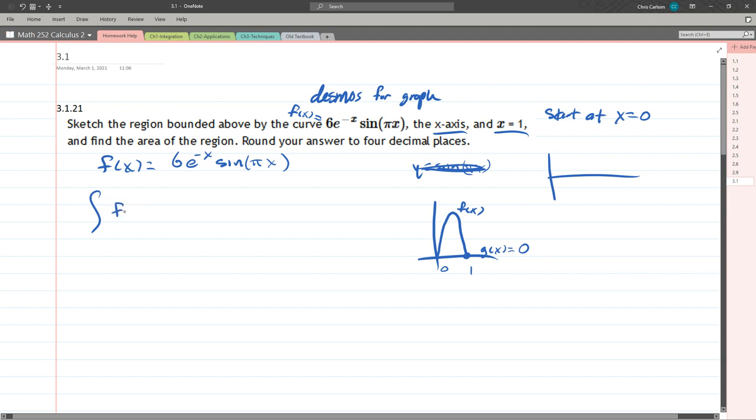We're just going to integrate the big function minus the small function dx from a to b. Now we're going 0 to 1 here, and we have 6e to the negative x sine pi x dx. So this is going to be our area.